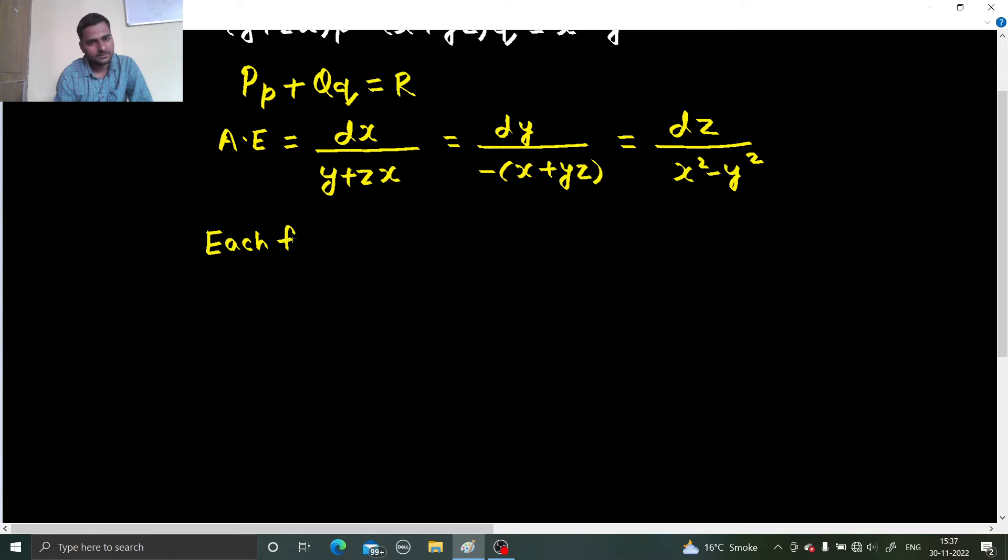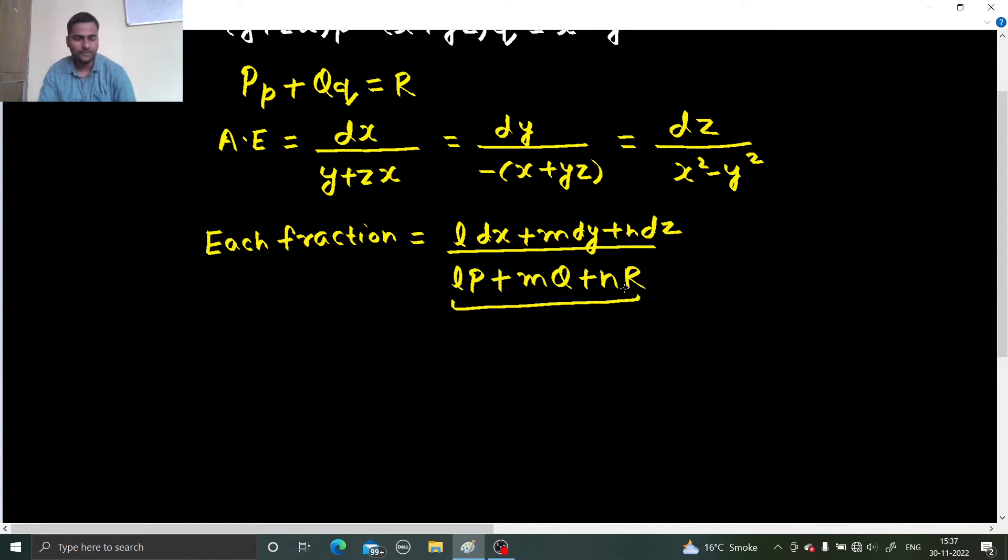So we write something like this. Each fraction equals to L dx plus M dy plus N dz divided by Lp plus M q plus N r. So this factor needs to be 0. So we need to find such value of L, M and N.